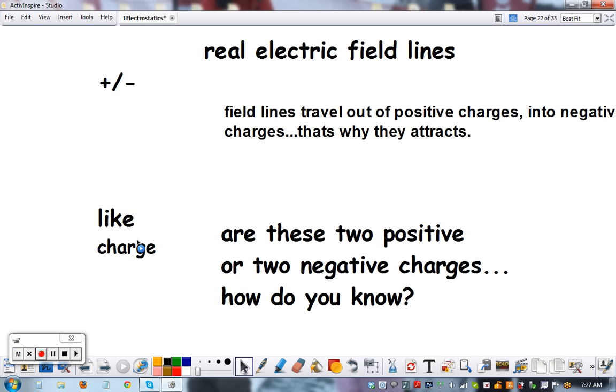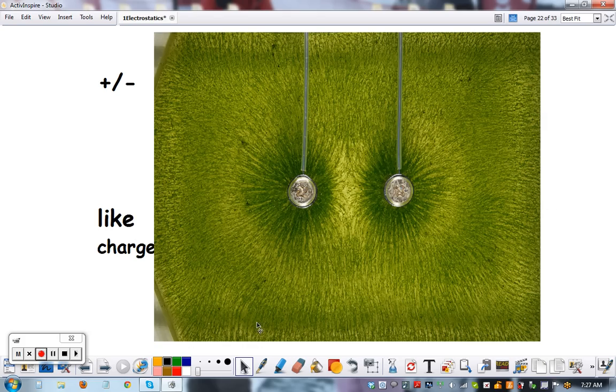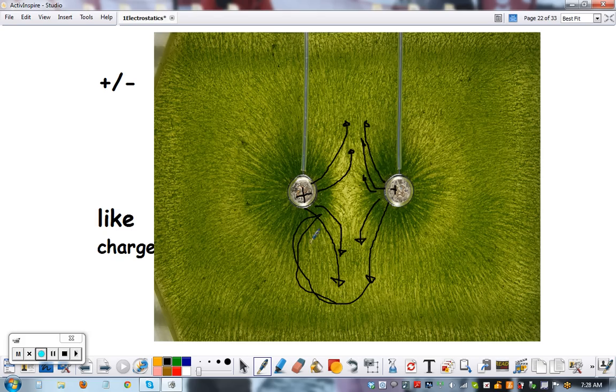But what if we have like charges? Let's say these are two positives. What's going to happen is they're going to come out, but then they're going to push off each other. They can't attract each other. They don't like each other. So these ones never connect. They push off. You can kind of see the way the metal lines are pushing off. Diagram this example between two positive charges put in close proximity. Here's how the field lines look. They're not connecting now. They push away.